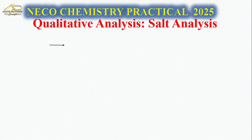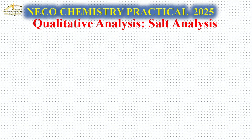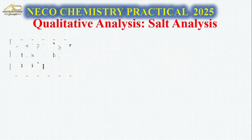Before moving on, note that Pb(NO₃)₂ can decompose to give PbO, O₂, and NO₂ gas. On strong heating it crackles, melts, and decomposes to the respective compounds - oxygen gas and NO₂ gas. The flame test of lead gives a bluish color.